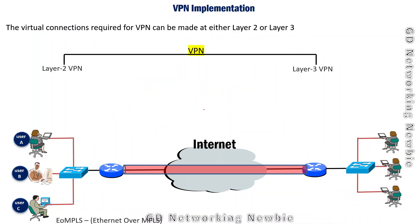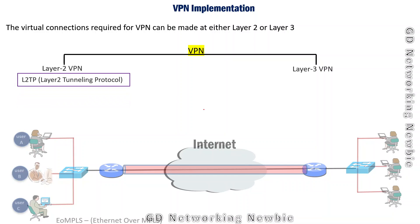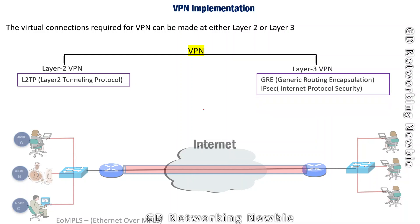We discussed two types of VPN: remote access VPN and site-to-site VPN. The virtual tunnels can be implemented at Layer 2 — using L2TP, the Layer 2 Tunneling Protocol — or at Layer 3, using IPsec (Internet Protocol Security) or GRE (Generic Routing Encapsulation). We will discuss IPsec in detail in the next video. This was the introduction to VPN and its types.